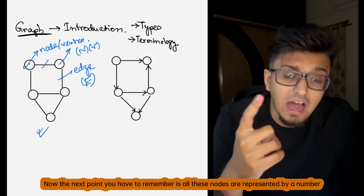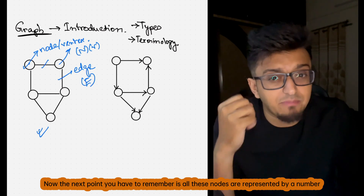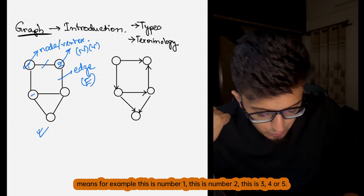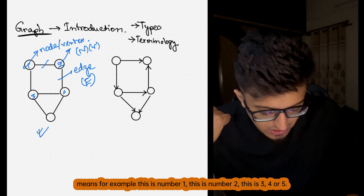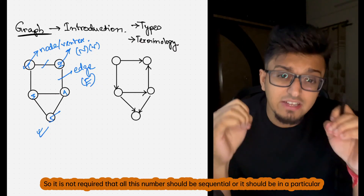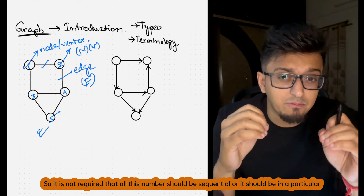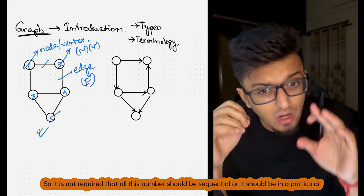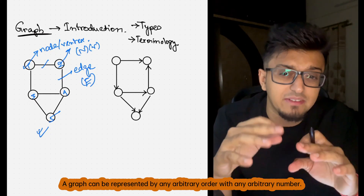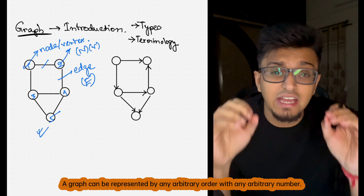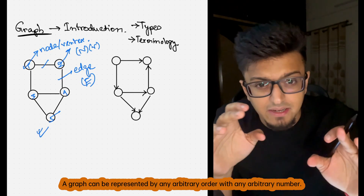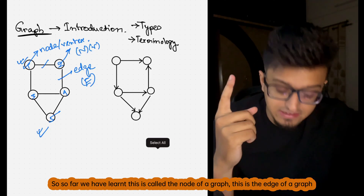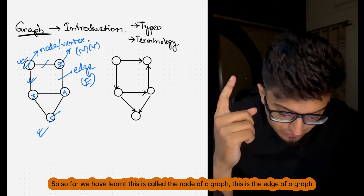All these nodes are represented by a number. For example, this is number one, this is number two, three, four, or five. It is not required that all these numbers should be sequential or in a particular order — a graph can be represented by any arbitrary order with any arbitrary number. So far we have learned: this is called the node of a graph, this is an edge of a graph, and a node can be represented by a simple number.